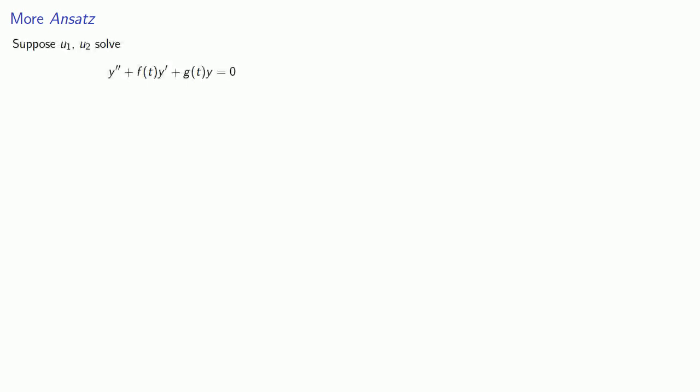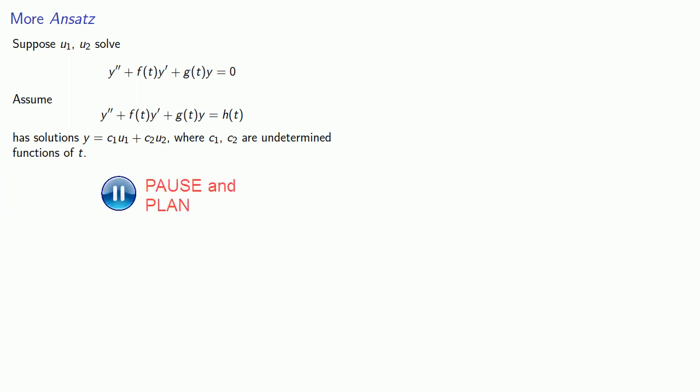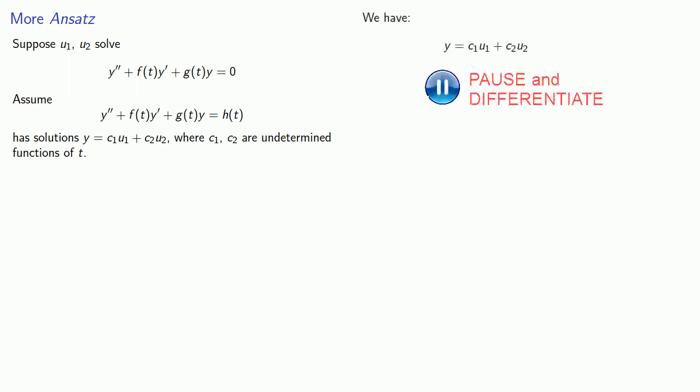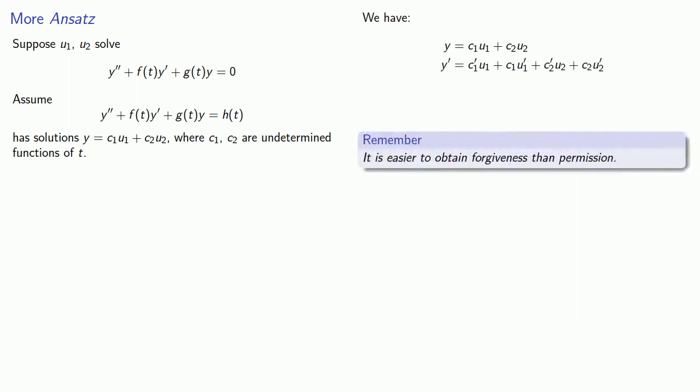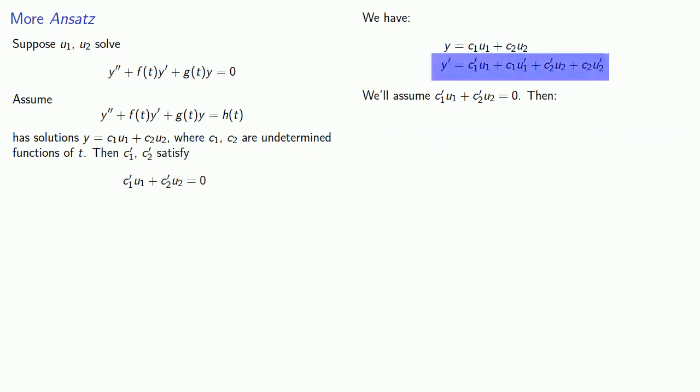Suppose u1 and u2 solve the homogeneous equation and assume the non-homogeneous equation has solutions y equals c1u1 plus c2u2 where c1 and c2 are undetermined functions of t. We'll differentiate and we'll assume c1 prime u1 plus c2 prime u2 equals zero. If it works we'll have a solution and all is forgiven. We'll record that assumption over here. That simplifies this derivative.